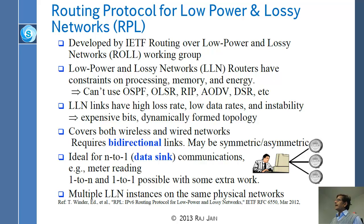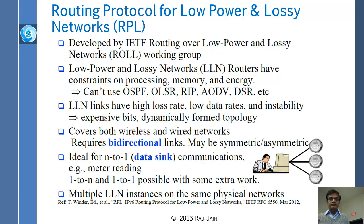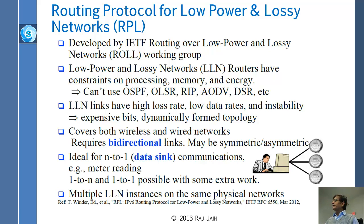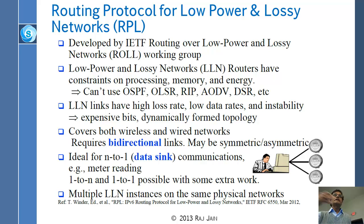LLN links have a high loss rate, low data rate, instability, and therefore the links are expensive and the dense topology changes very fast — dynamically created topology that might change every minute or few minutes. This covers both wired and wireless networks and is actually designed originally for meter reading, where you have lots of devices sitting at one place. It is really designed for N-to-1 communication.